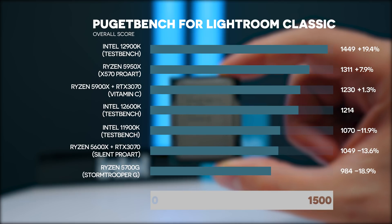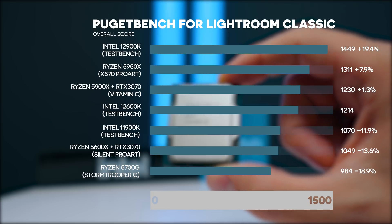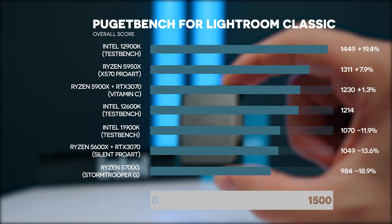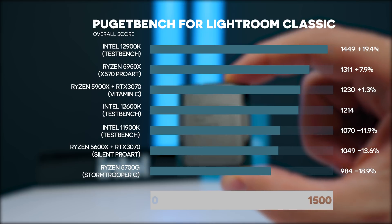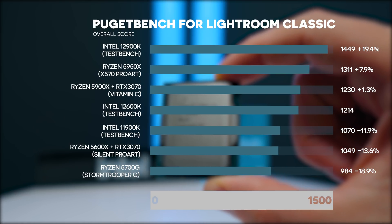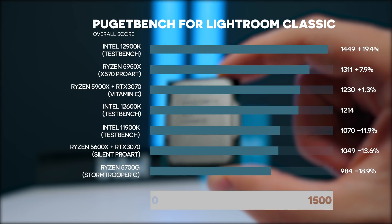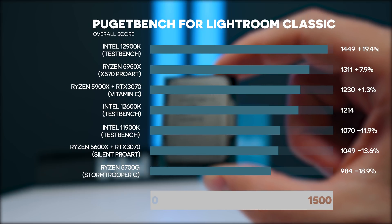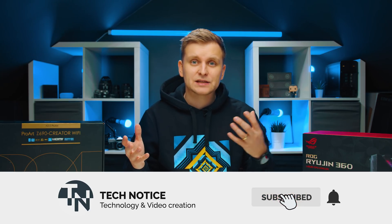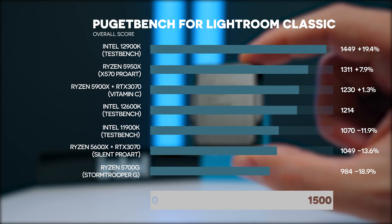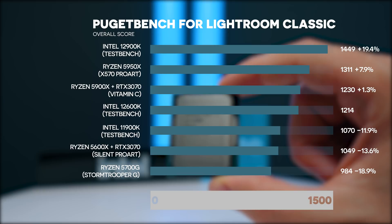In Lightroom Classic, the 12900K is on top at 19.4% faster than the 12600K. The Ryzen 5950X is 7.9% faster and the 5900X is 1.3% faster. The 11900K is 11.9% slower and the 5600X 13.6% slower. The high core count CPUs score well here because Lightroom Classic measures active and passive scores — they export photos faster, lifting overall scores, while their active editing score is more dependent on single-core performance. Being only 1.3% behind the 5900X in photo editing is seriously impressive.